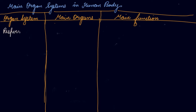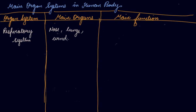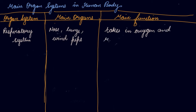The next system is the respiratory system. To breathe, you require your nose, lungs, and windpipe, through which oxygen goes to the lungs. The main function is to take in oxygen and remove carbon dioxide.